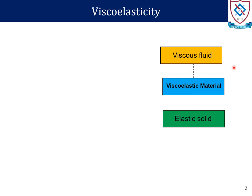In general we know about two types of materials: the fluids whose nature is viscous and the solids which are being considered as elastic. Now we are going to discuss another type of materials which are called viscoelastic materials. These materials exhibit the properties of both elastic solids and viscous fluids.